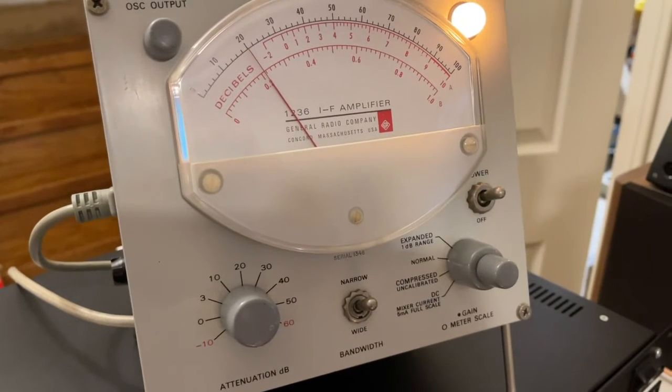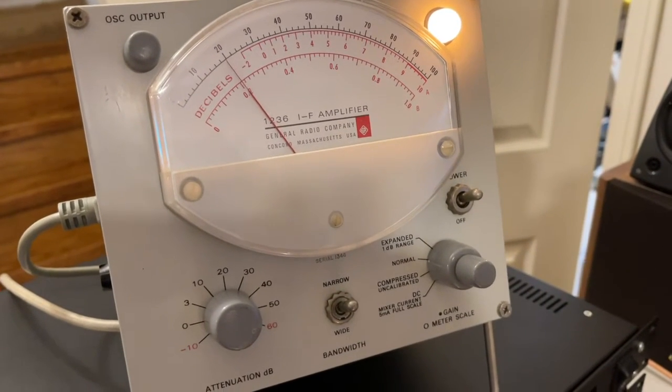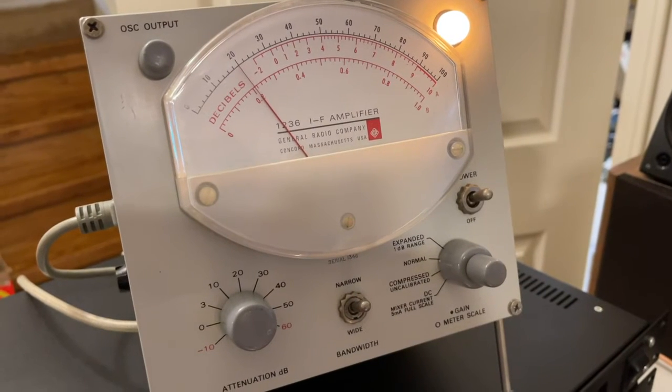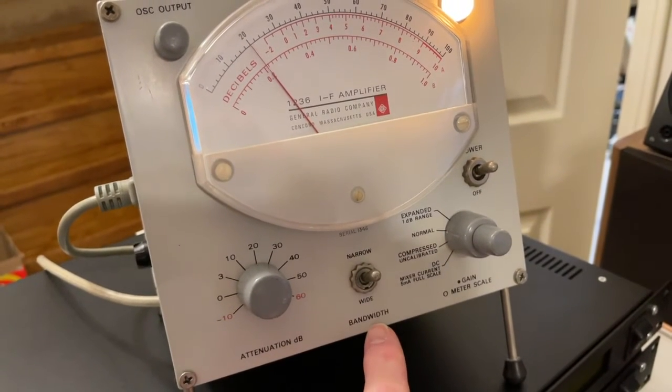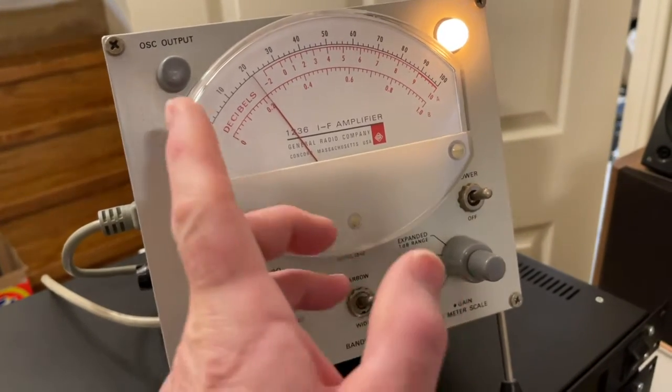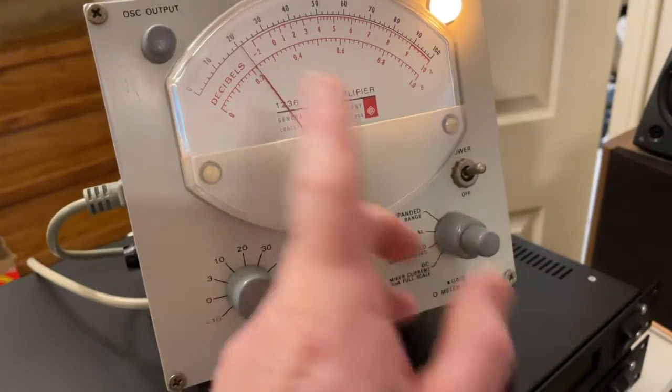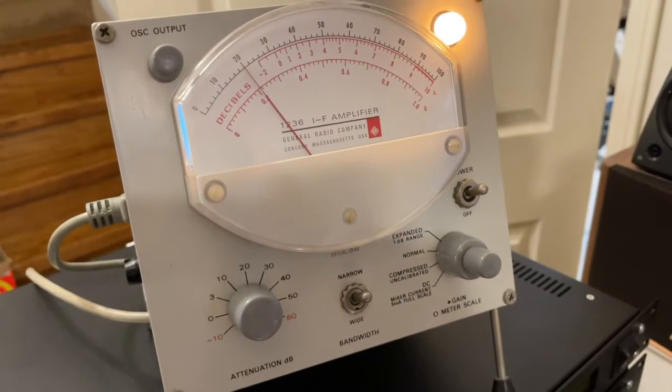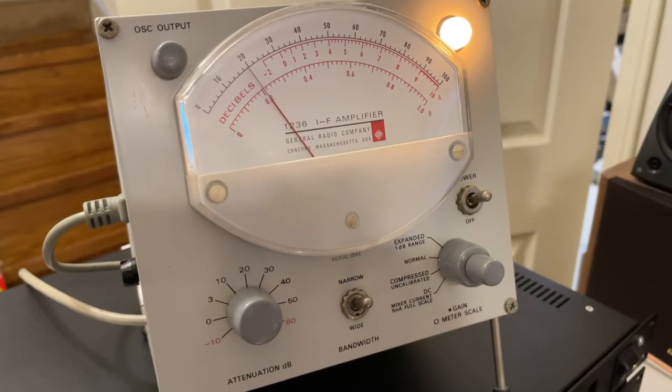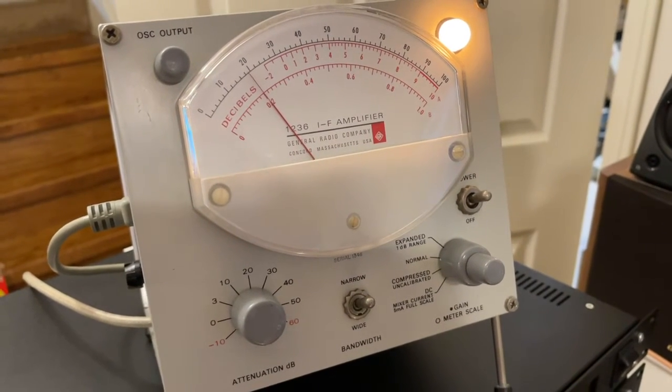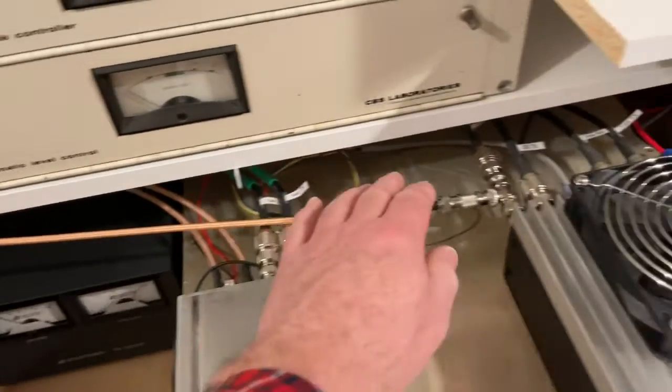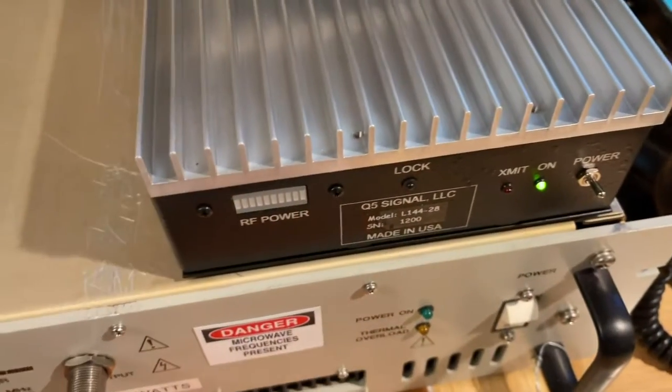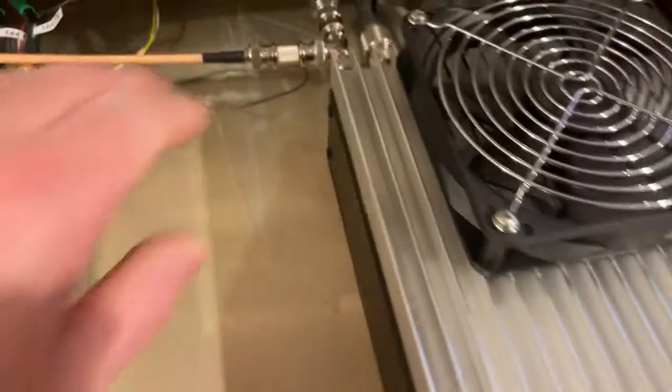This is the General Radio 1236 calibrated IF amplifier at 28 MHz. You can select the bandwidth at 500 kHz or 4 MHz, and it will have a 10 dB scale or a 1 dB scale depending on the settings, which is very high resolution for determining noise. And that input of that IF amplifier and meter is tapped from the Q5 signal transverter at 28 MHz.